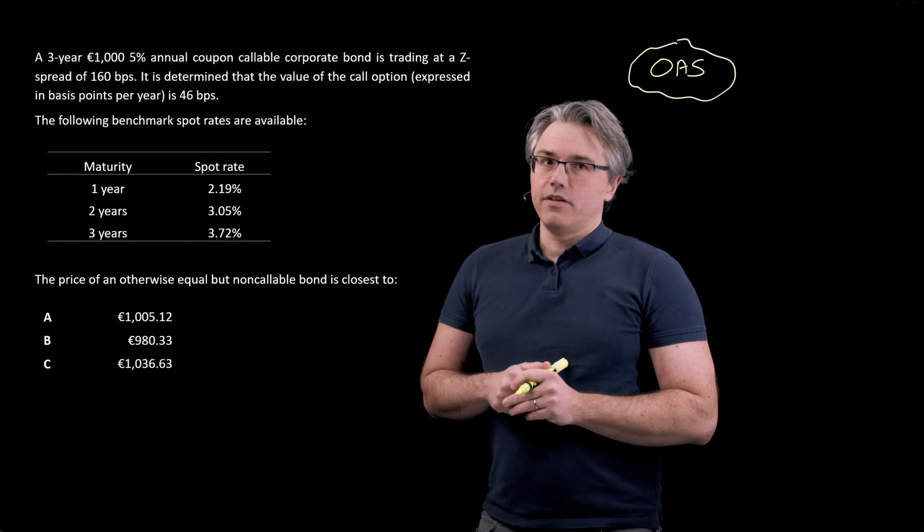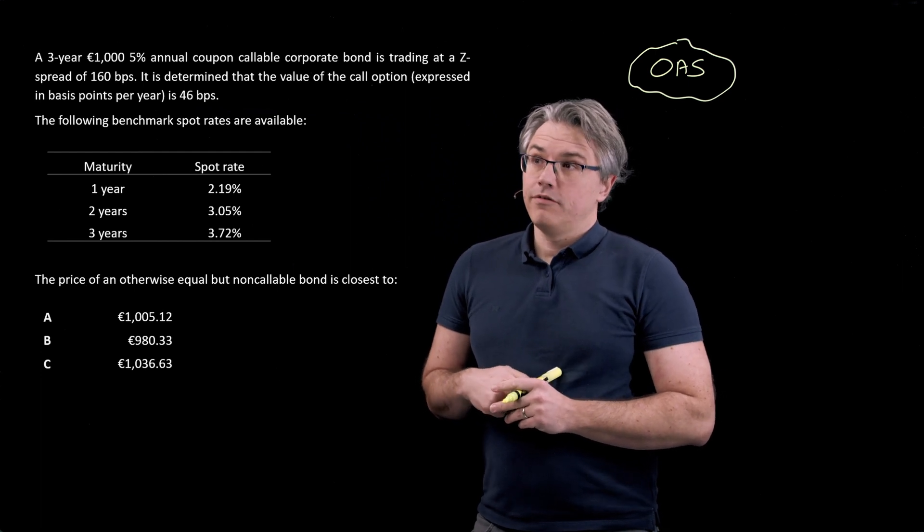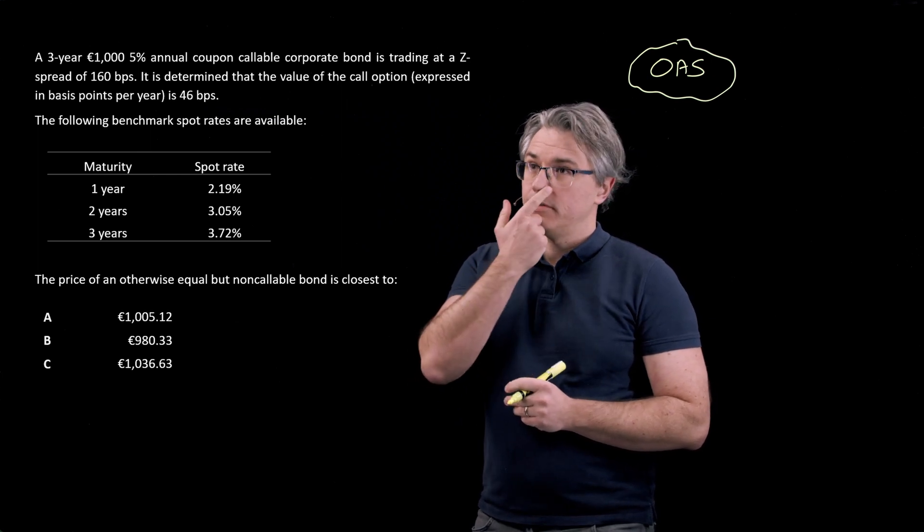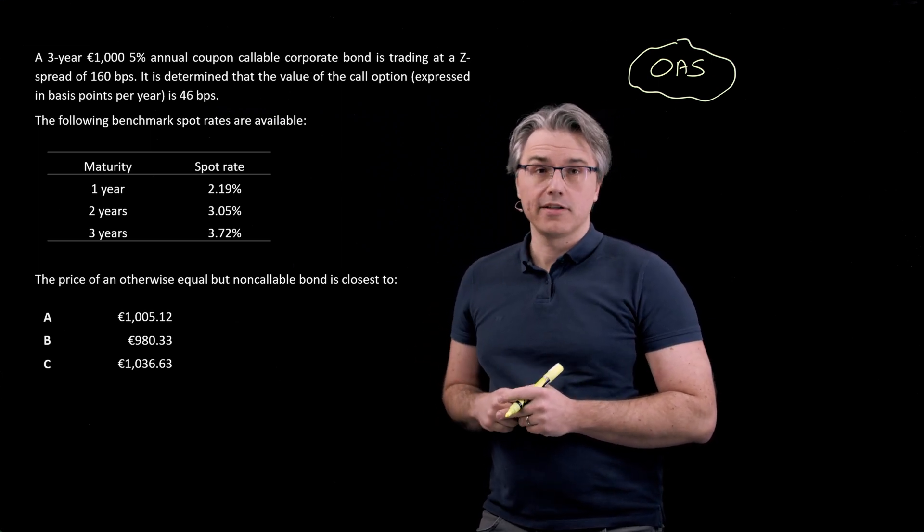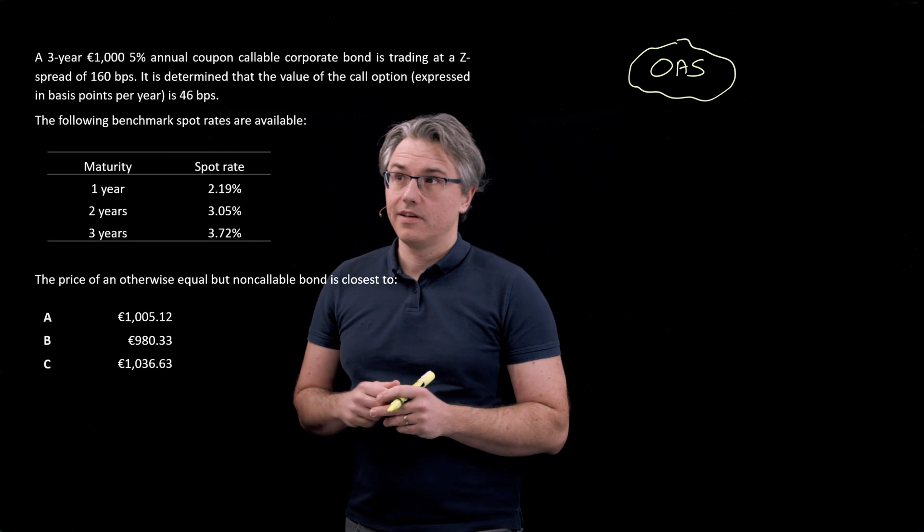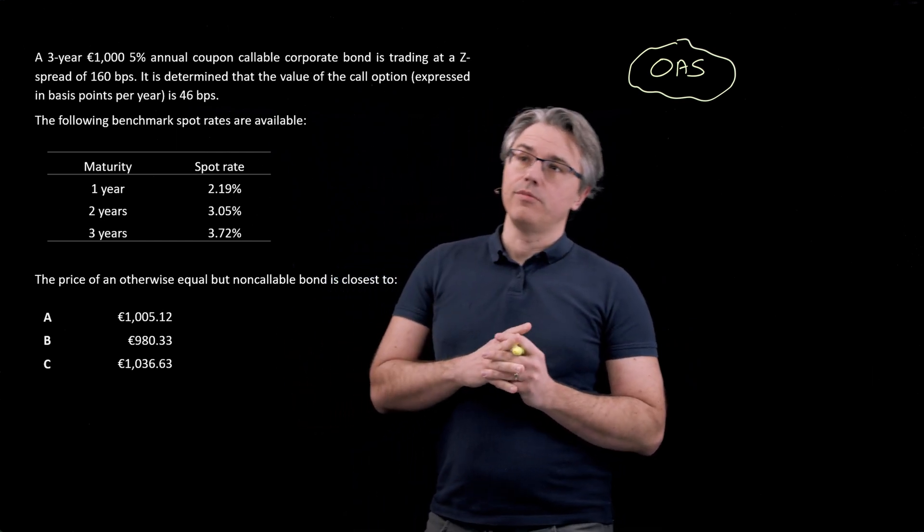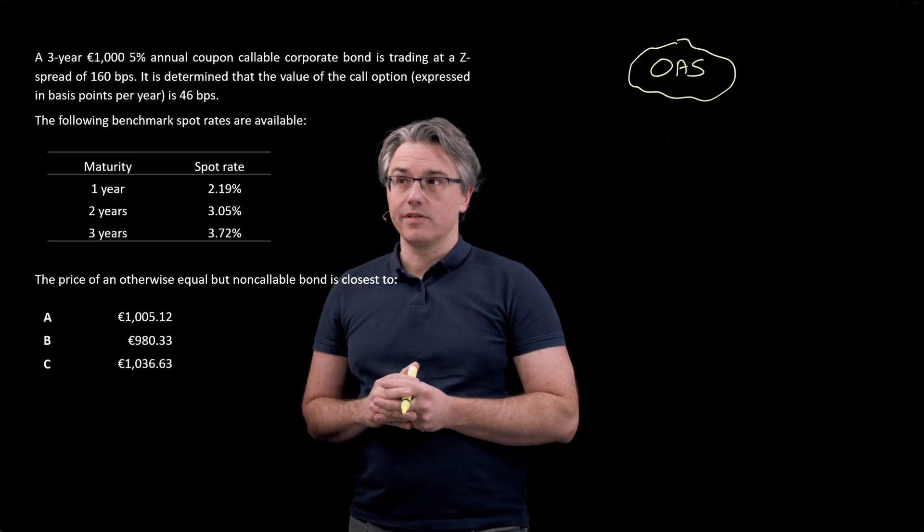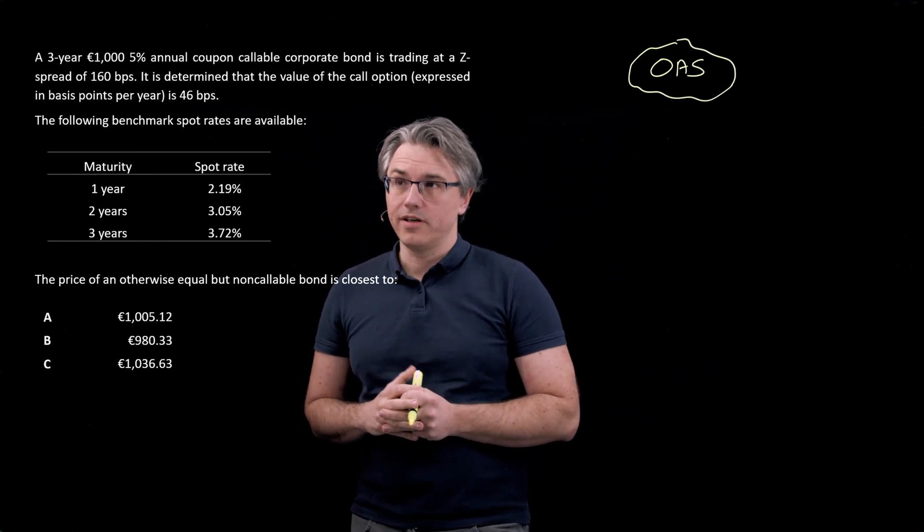This is the question which I want us to have a go at. A three-year €1,000 5% annual coupon callable corporate bond is trading at a Z-spread of 160 basis points. It is determined that the value of the call option expressed in basis points per year is 46 basis points and the following benchmark spot rates are available.